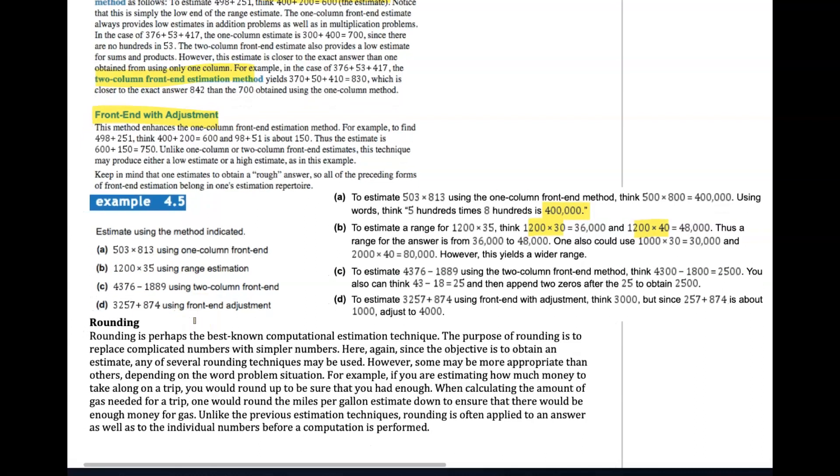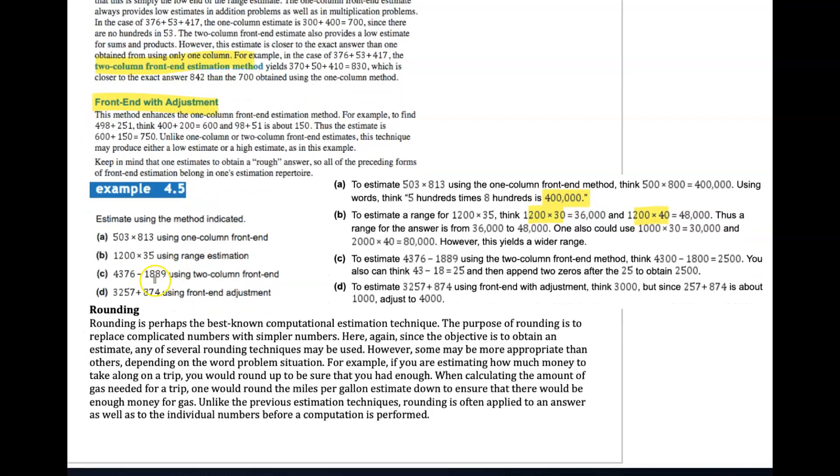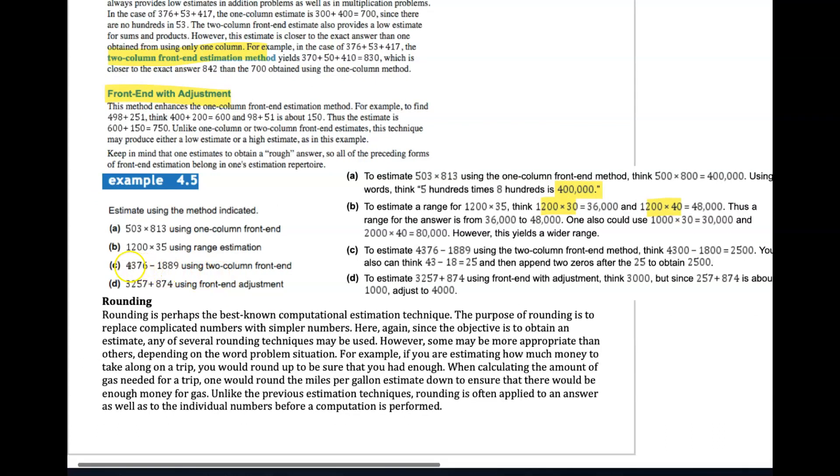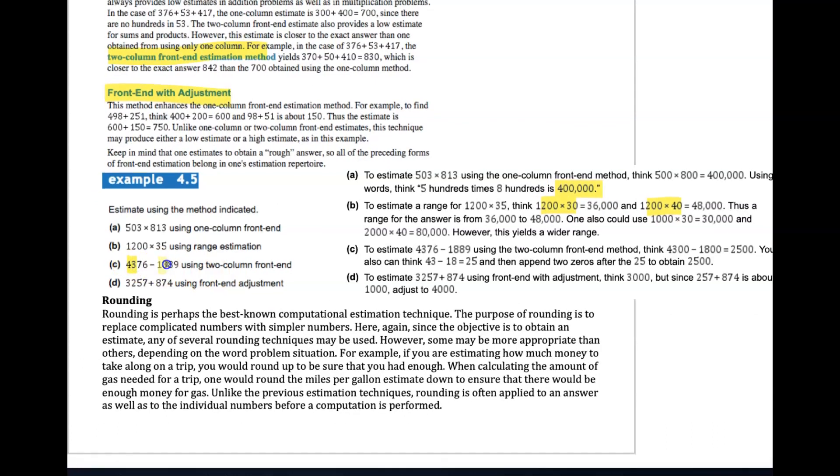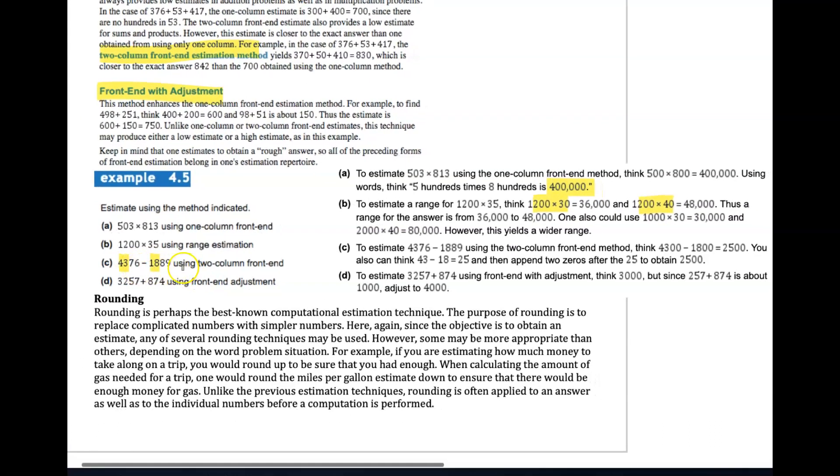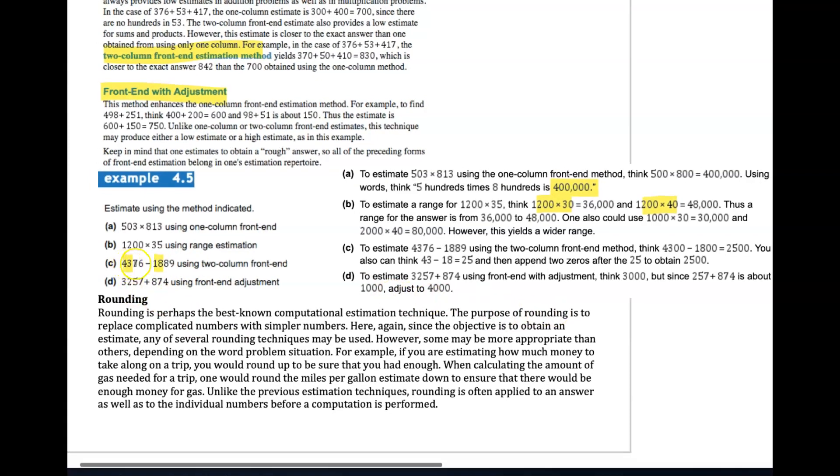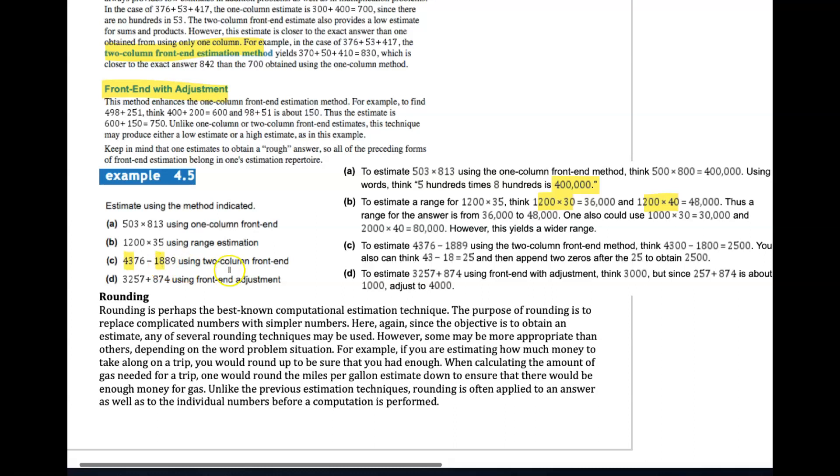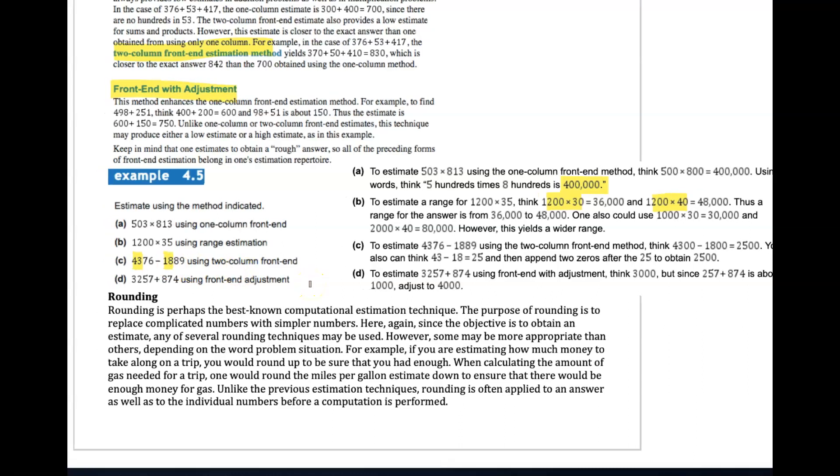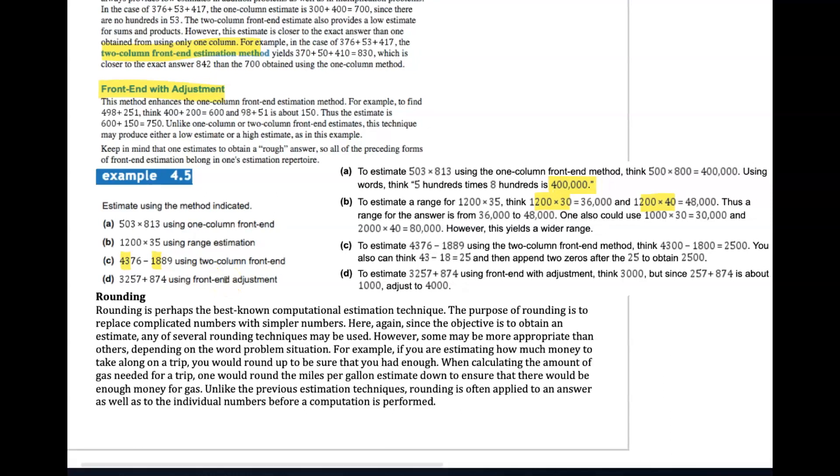Two-column front-end: we're going to use 43 and 18, so 4300 minus 1800 would be a way to do it. Some people may do 4400 minus 1900 to get an estimate - it's your preference. Front-end adjustment: in this case notice we turn this to 3000 and then turn this to 1000, and then you get 4000.